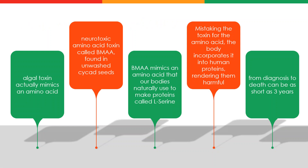This algae mimics a toxin called BMAA — beta-methyl-amino-L-alanine. It's found in unwashed cycad seeds. Various population groups, such as those in the Kii Peninsula in Japan, Western Papua New Guinea, and Aboriginal Australians, consumed cycad flour, but they would wash the seeds before use. There are clusters of these populations that have experienced ALS or MND. Blue-green algae blooms are caused by agricultural runoff from pesticides and fertilizers, and are known to kill livestock.